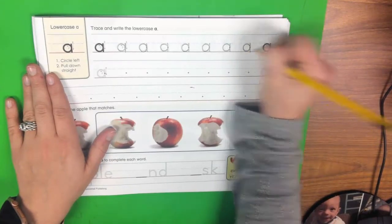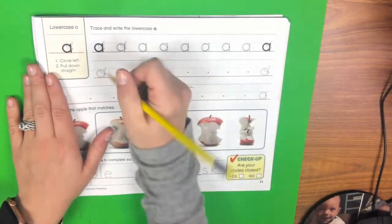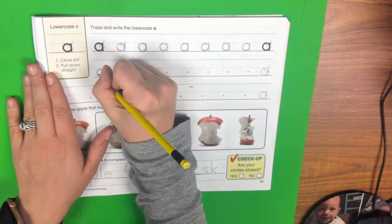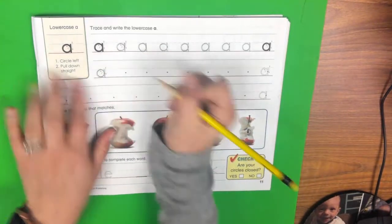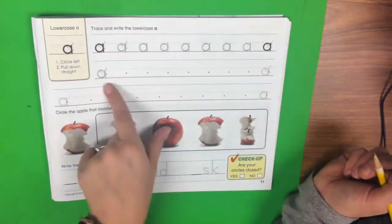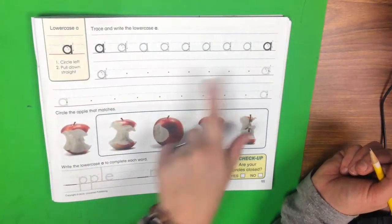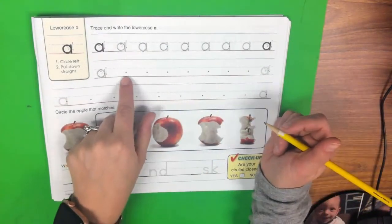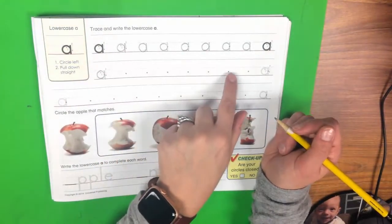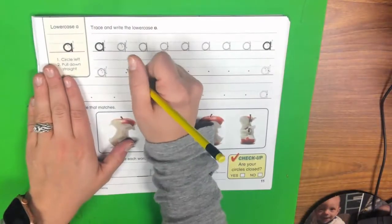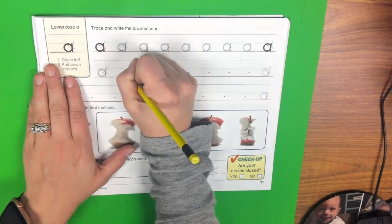Circle left, pull it down straight. You're going to keep doing that. You're going to trace it one more time here. And then you're going to have the opportunity to practice all by yourself on these two lines. Everywhere you see a green dot, that means that you need to make a lowercase a there.